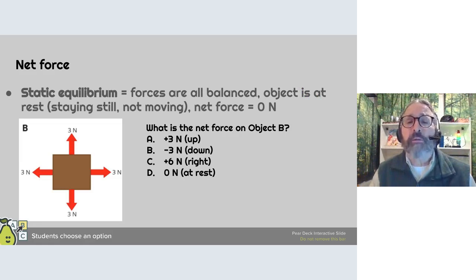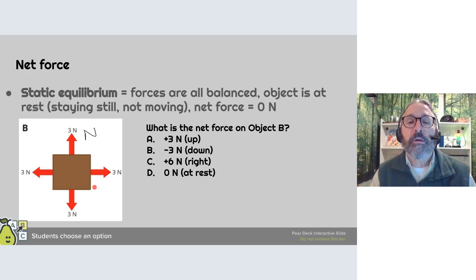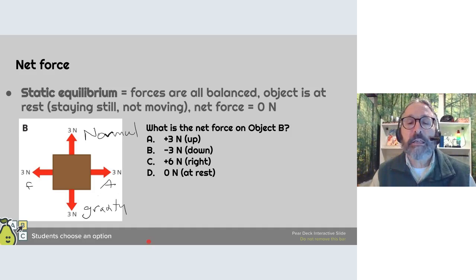Static equilibrium is where forces are balanced — the object is at rest, staying still, not moving, and has a net force of zero newtons. For example, an object sitting on the floor could have 3 newtons normal force up, 3 newtons gravity down, 3 newtons applied force, and 3 newtons friction — because they are all equal, the object is at rest. That is the definition of static equilibrium: all forces are balanced.